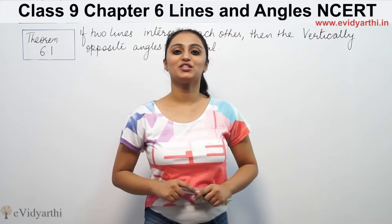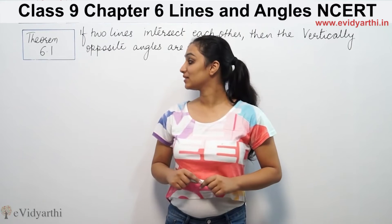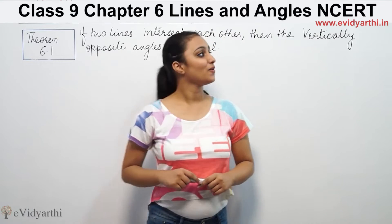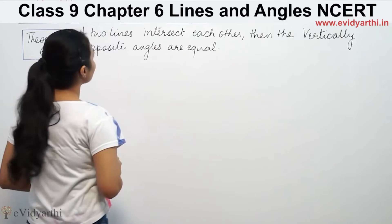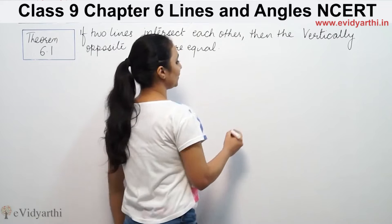Hi, this is Khushbu with another question of lines and angles. This is question number 6.1 from page 94 of NCERT. If two lines intersect each other, then the vertically opposite angles are equal.